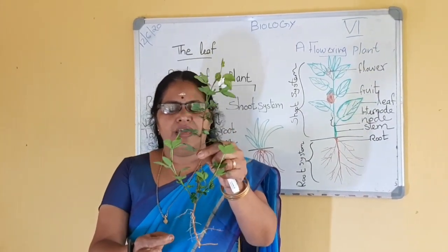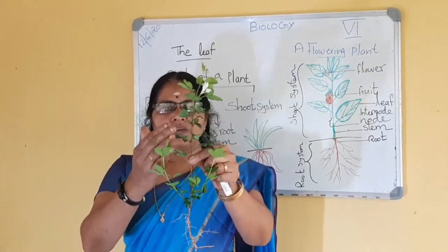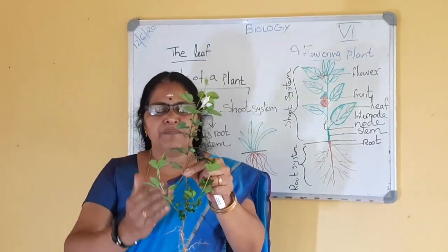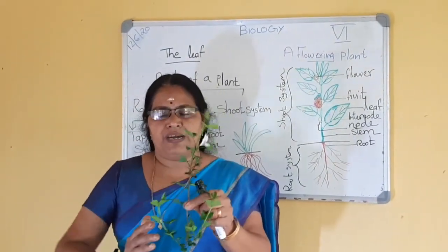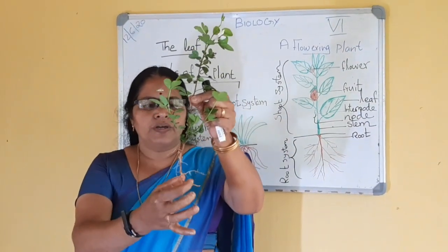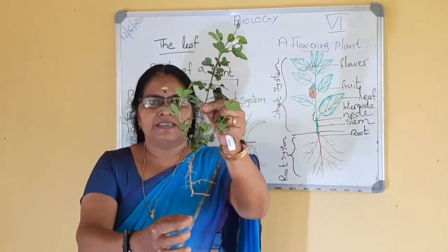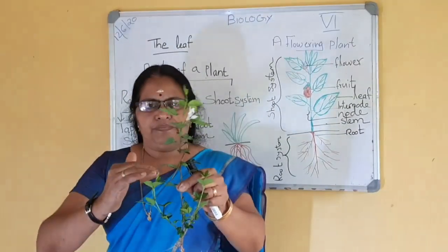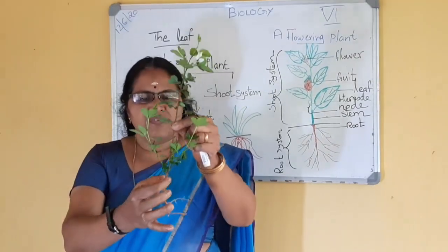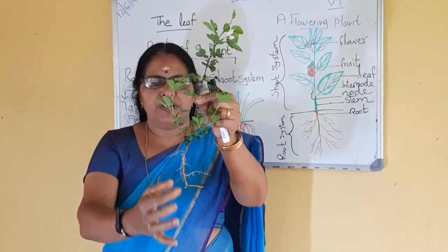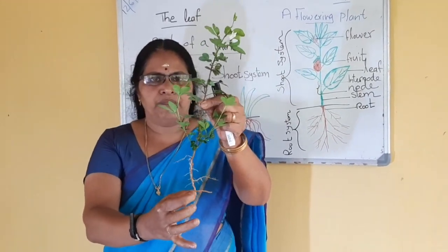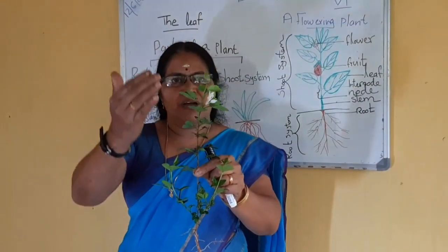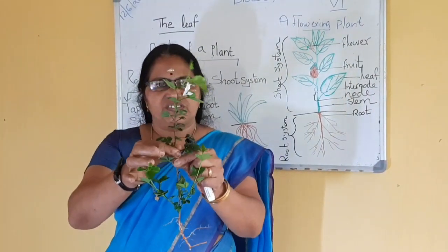Here, you can see the two main parts of the plant. A flowering plant has two main parts. One part grows under the ground and the other part grows above the ground. The part of the plant which grows under the ground is called the root system, and the part which grows above the ground is called the shoot system.